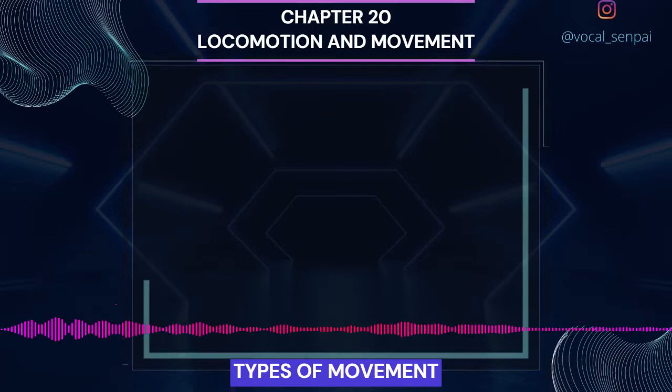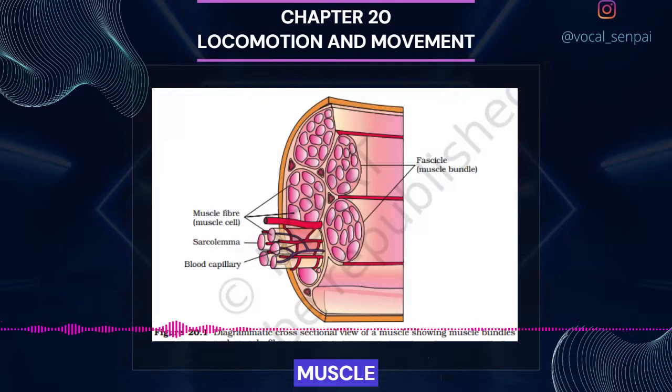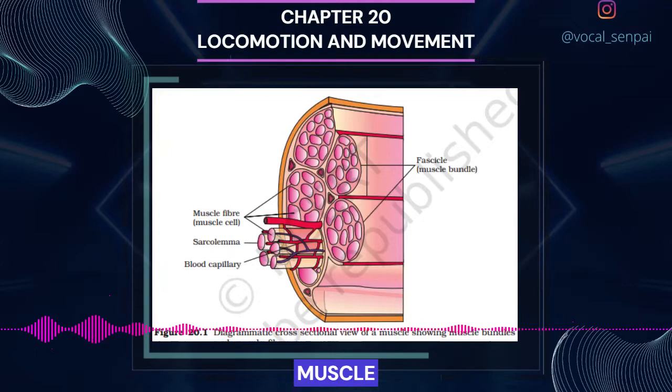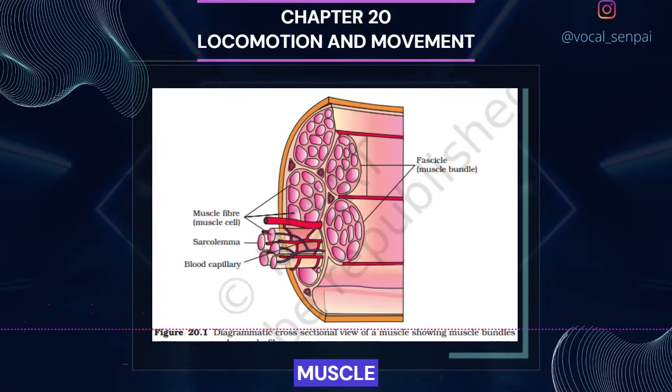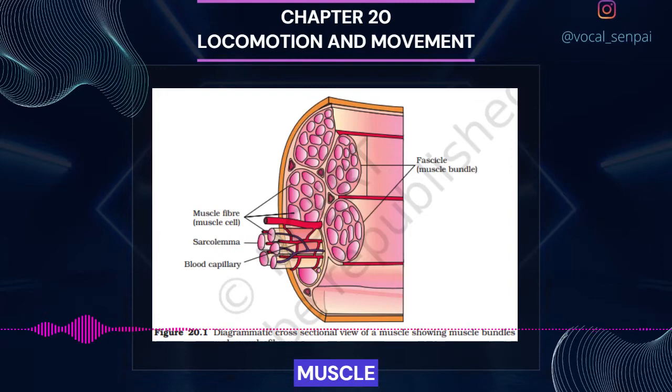Muscle. Cilia and flagella are outgrowths of the cell membrane. Flagellar movement helps in the swimming of spermatozoa, maintenance of water current in the canal system of sponges, and in locomotion of protozoans like Euglena. Muscle is a specialized tissue of mesodermal origin. About 40–50% of the body weight of a human adult is contributed by muscles. They have special properties like excitability, contractility, extensibility and elasticity.